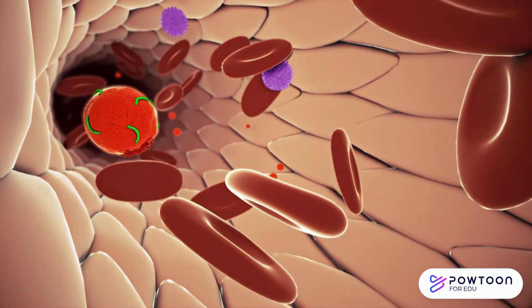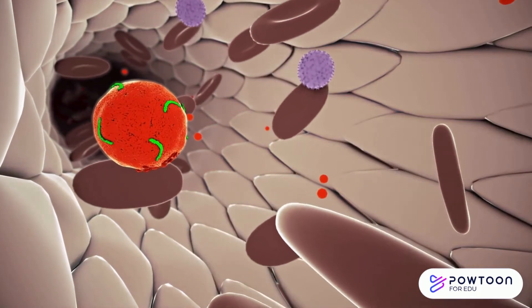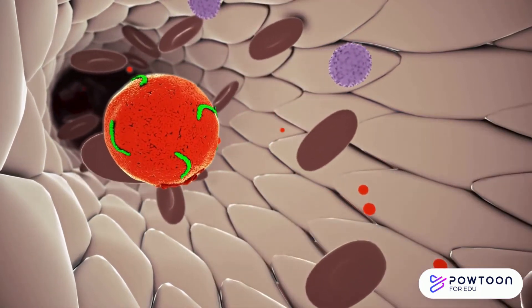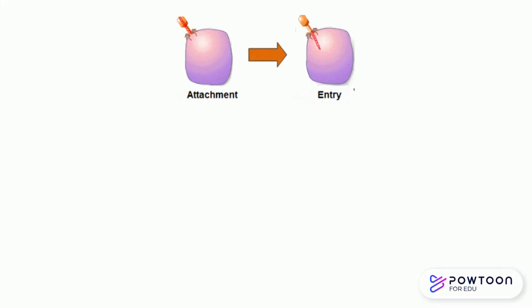Now let's talk about how hepatitis C affects the liver. Once you become infected and the hepatitis C virus is in your bloodstream, the virus enters your liver and binds to specific receptors on your liver cells through a process called endocytosis. Then the membrane that envelopes the genetic material of the virus, or RNA, breaks down and releases the viral RNA into the liver cell.